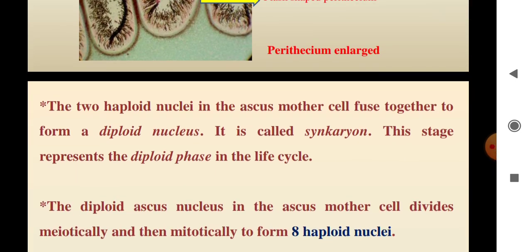The ascus is at the tip in a binucleate condition. The two haploid nuclei in the ascus are fused to form a diploid nucleus. This stage represents the diploid phase in the life cycle.